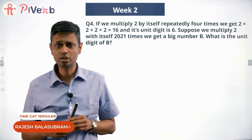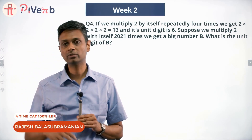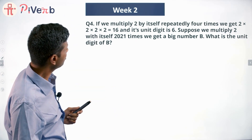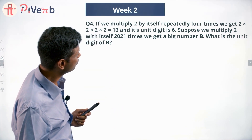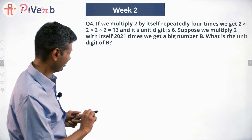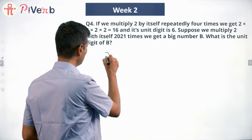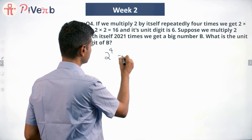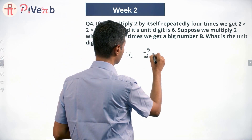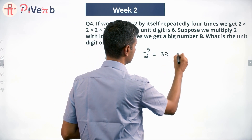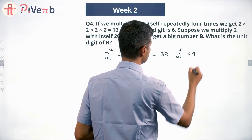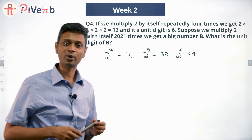This is a standard routine question — you should be able to knock it off. Give it a try and we will discuss. If you multiply 2 by itself repeatedly 4 times, we get 2×2×2×2 = 16. This is called 2 raised to the power 4 equals 16. 2 raised to the power 5 is 32, and 2 raised to the power 6 is 64.